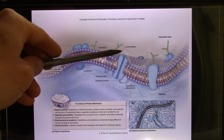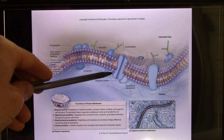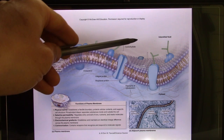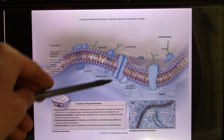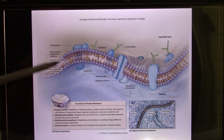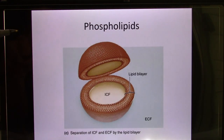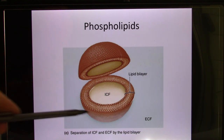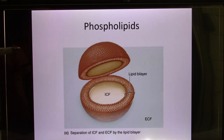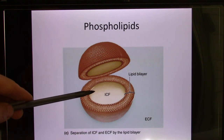And this protein's function is to make molecules move in and out — so they can be an ion channel or a carrier. We'll talk more about it next time. Today let's focus on the phospholipid. It's a lipid bilayer structure. On the inside, we have ICF — intracellular fluid — and on the outside, we have ECF — extracellular fluid. They're all water.